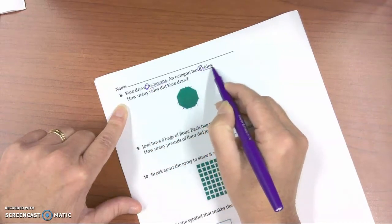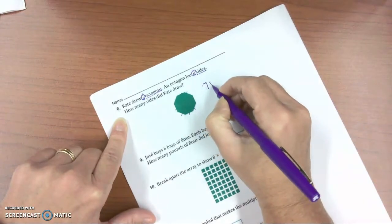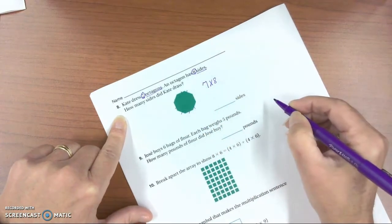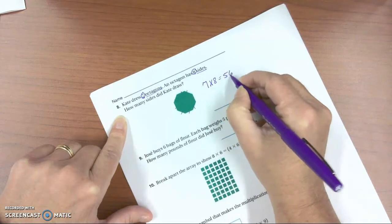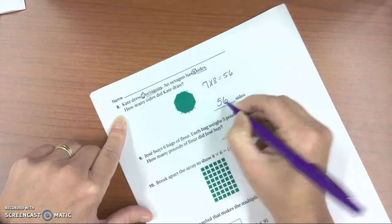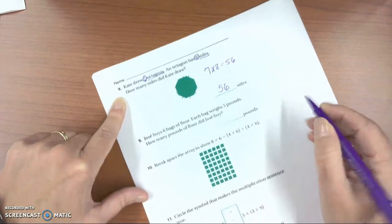Each one has 8 sides, so we're working the problem 7 times 8. Hopefully you know that 7 times 8 is 56, and that is your answer to that one.